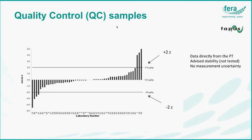For many of our products, we've made available the samples after the proficiency test for quality control purposes. It enables laboratories to troubleshoot performance or simply to use it as an ongoing mechanism for quality control outside of the formal PT process. The data for QCs are derived directly from the proficiency test. We advise on the stability, but the stability is not formally tested and we do not provide measurement uncertainty — it's just the PT data for that sample.